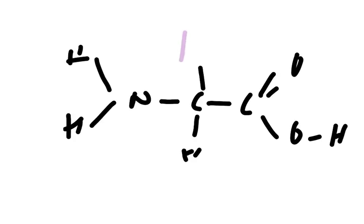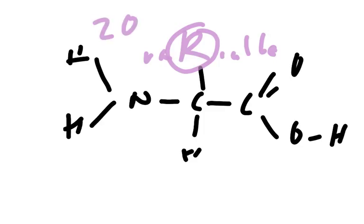Proteins also have this group that biologists call the R group, which stands for variable. This is not a member of the periodic table. There are 20 different R groups, and they give each of the amino acids a different property, which is important in the folding of the chain.